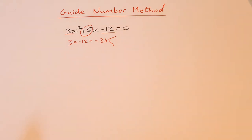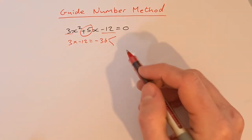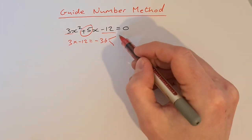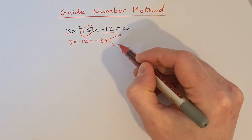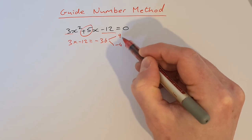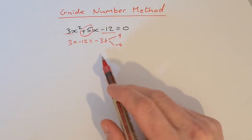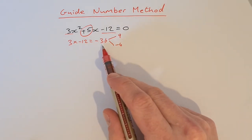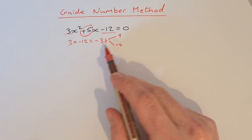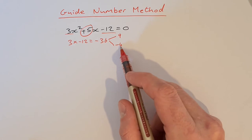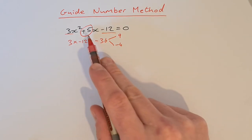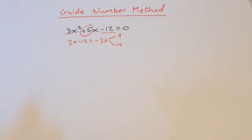For this situation, those factors are going to be 9 and minus 4. 9 multiplied by minus 4 gives you minus 36, and 9 added to minus 4 gives you plus 5.